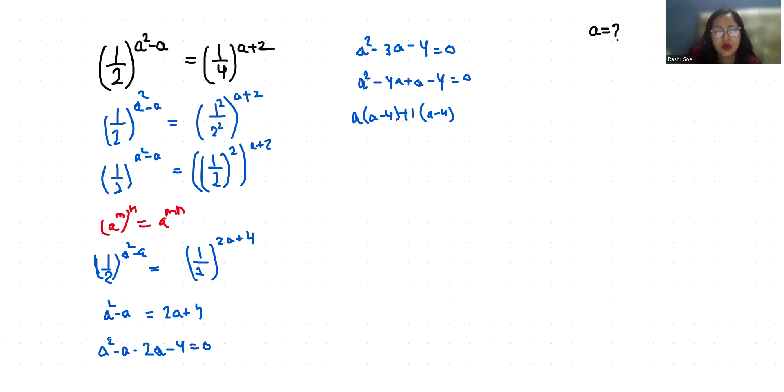Now a-4 is common, so (a+1)(a-4) = 0. So a-4 = 0, so a = 4. a+1 = 0, so a = -1. These are the two values of a.